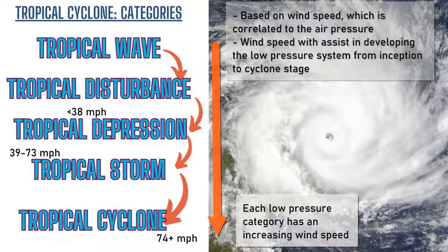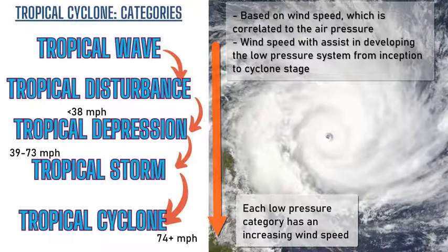A depression features slightly lower pressure, faster winds, and the start of organized rain bands and thunderstorm clouds. A tropical storm is a larger version of a depression, with more clouds, more wind, more precipitation, as it migrates across the oceans. If it reaches sustained winds of 74 miles per hour, it is classified as a full tropical cyclone — called a hurricane in the Atlantic, a typhoon in the Pacific, or simply a cyclone in the southern hemisphere.